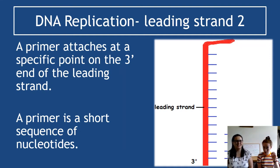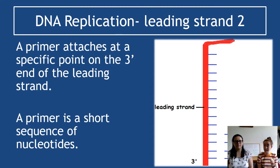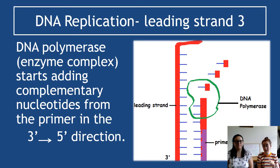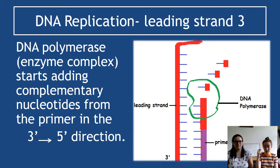The next thing that happens is a primer — a short segment of DNA, perhaps containing adenine, thymine, guanine, and cytosine — attaches to a specific point at the 3' end of the leading strand. You must know it's always at the 3' end, never the 5' end. In the diagram you can see the primer in purple — that short sequence of about four nucleotides — attaching to that 3' end.